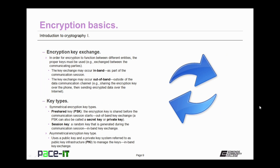Encryption requires the exchange of security keys. In order for encryption to function between different entities, the proper security keys must be used, as the keys must be exchanged between the communicating parties. The key exchange may occur in-band, as part of the actual communication session, or the key exchange may occur out-of-band, outside of the data communication channel. For example, sharing the encryption key over the phone and then sending encrypted data over the internet.